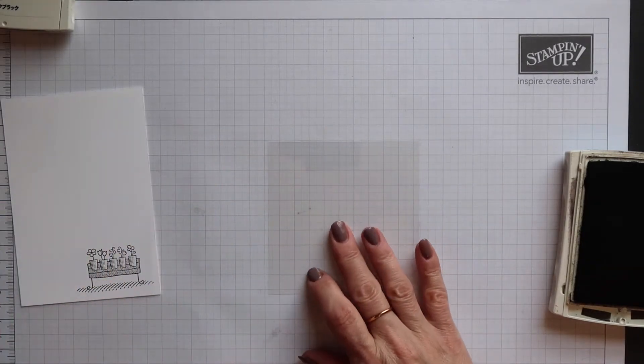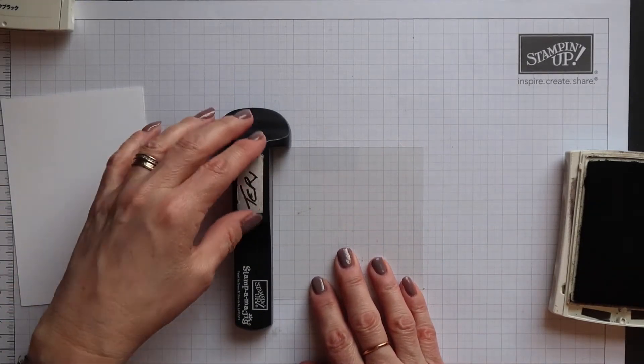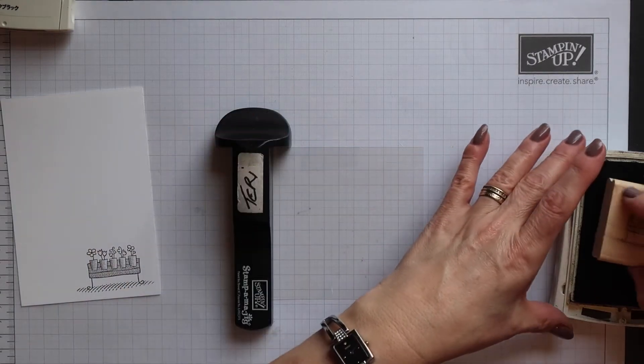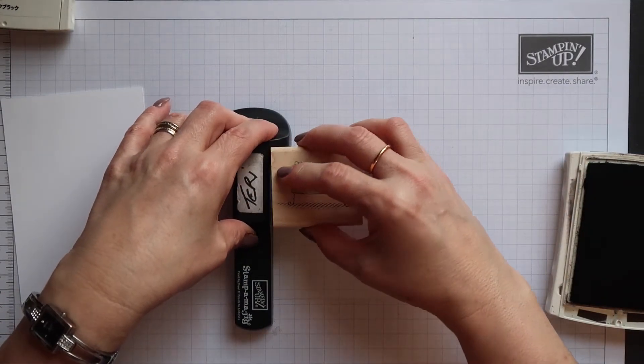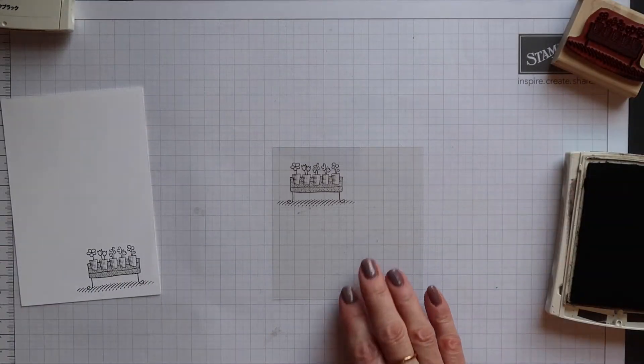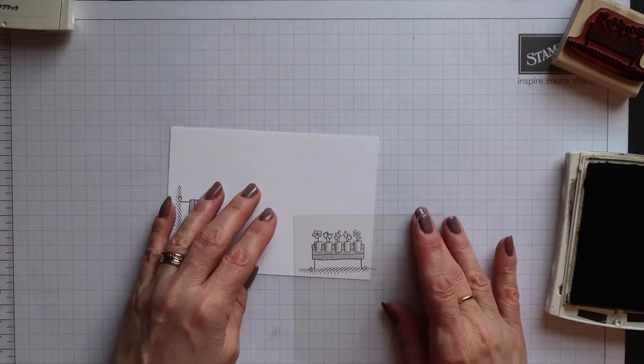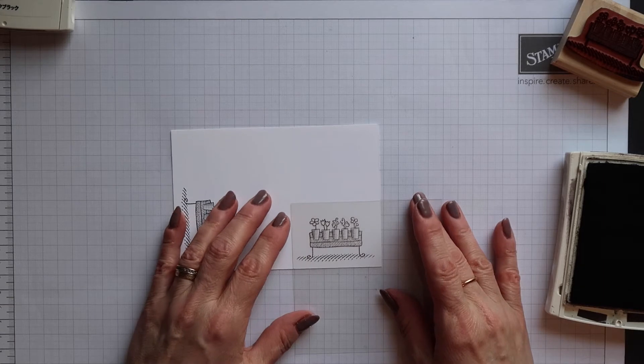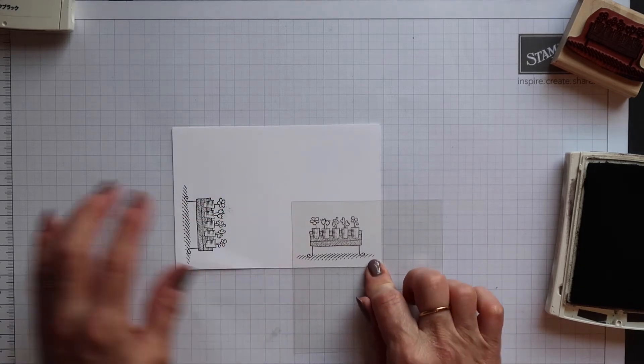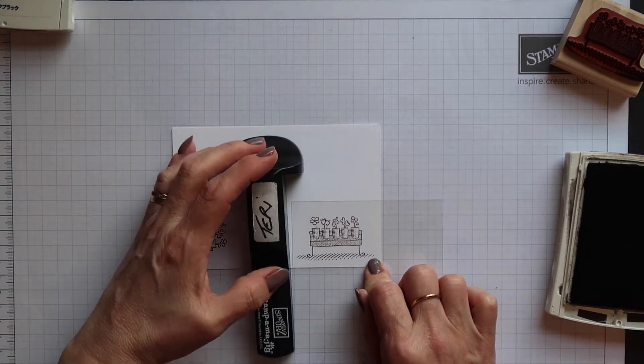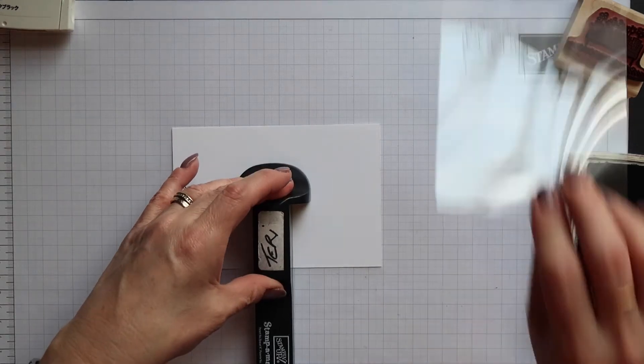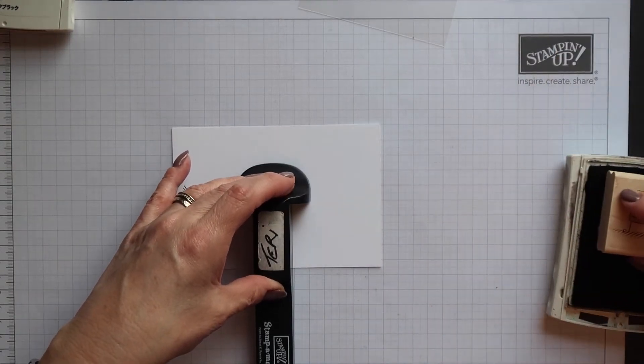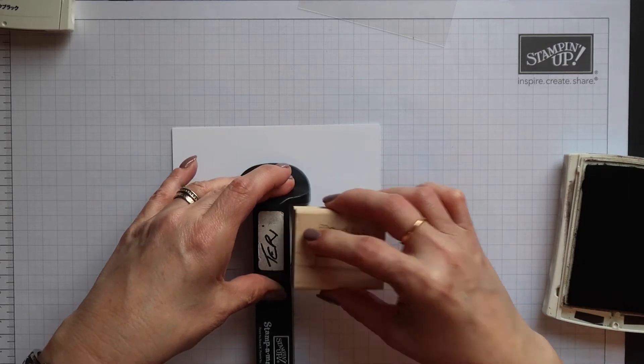Alternatively you can use acetate. You can use this as a permanent imaging sheet with Stazon or as a reusable sheet using dye based inks. So again just position your handle exactly as before, remove the sheet, position your stamp and stamp it down.